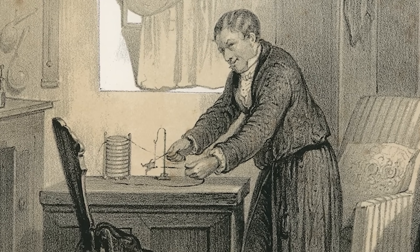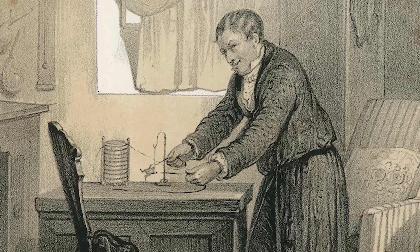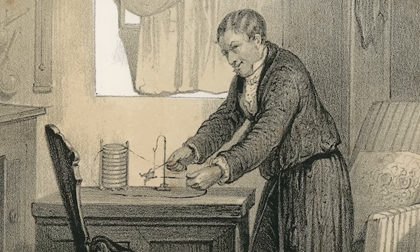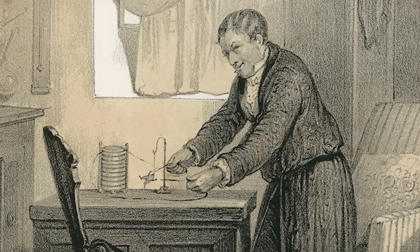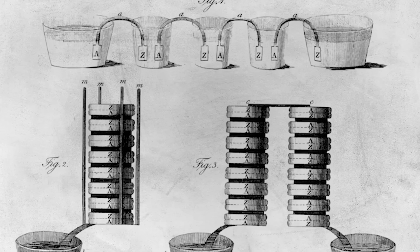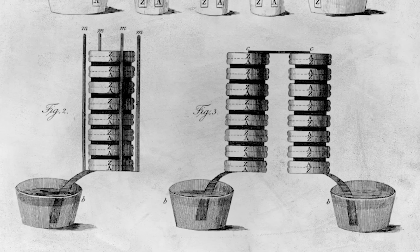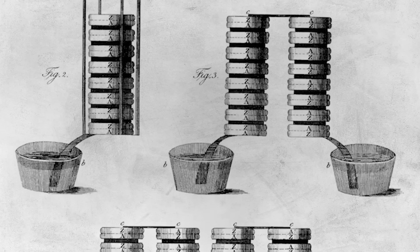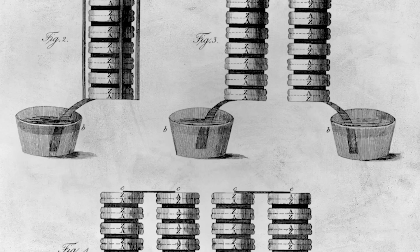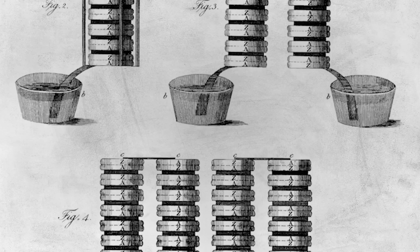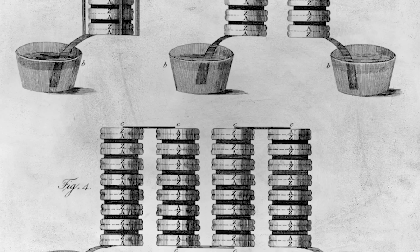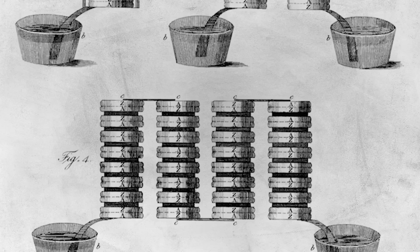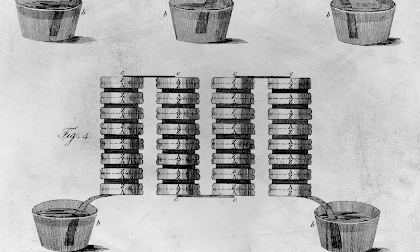To further prove his point, in 1800, Volta used the principles he discovered in his earlier experiments to construct the world's first chemical battery. Known as a Voltaic pile, the device consisted of a stack of alternating copper and zinc discs separated by cardboard discs soaked in either salt water or diluted sulfuric acid. By connecting wires to both ends of the pile, Volta could create a weak but continuous electric current.